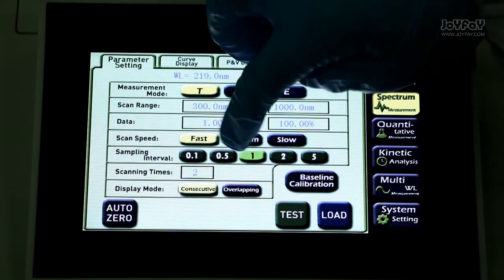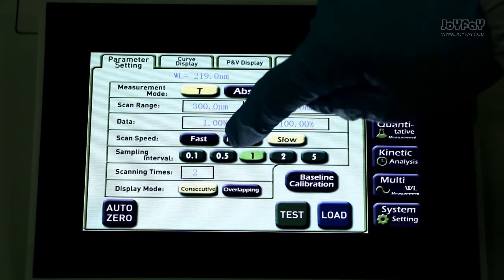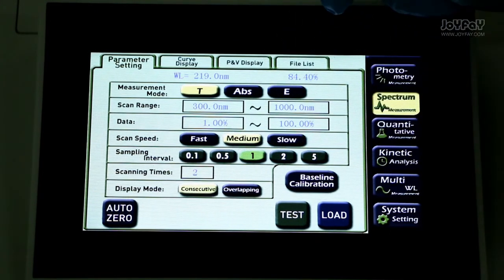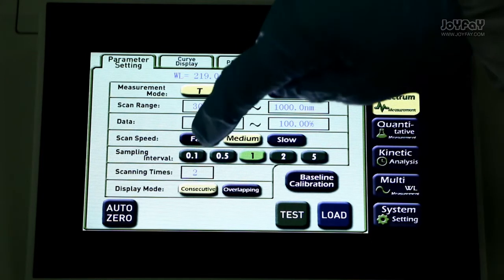There are three types of speed: fast, medium, and slow. We will choose medium. There are five interval options. Let me choose one.